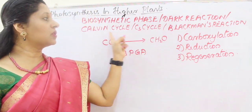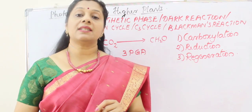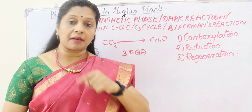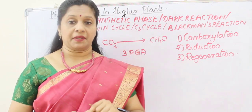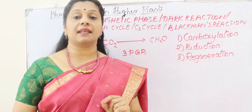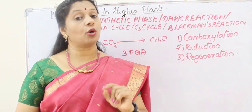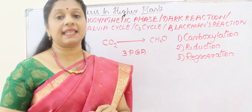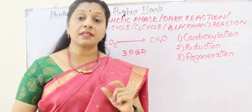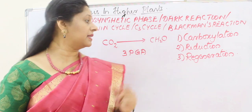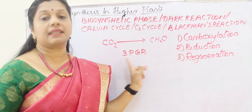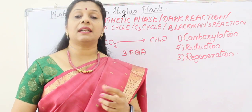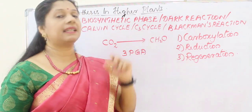It is also called the Calvin cycle because scientist Melvin Calvin found the path of carbon in this particular cycle. It is named after him — Calvin cycle — and Calvin was awarded the Nobel Prize in 1961 for this discovery. It is also called the C3 cycle because the first stable compound formed is 3-phosphoglyceric acid, which is a 3-carbon compound, so it is called the C3 cycle.